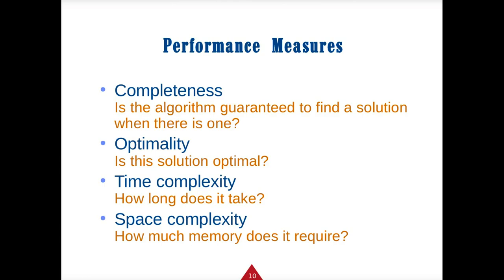To measure a good search, we assess completeness — did it find a solution if one exists? Is that solution optimal? What's the time complexity in big O? And how much space or memory does it require? These last two are especially important. For example, a large data center like Google prioritizes search time over space, whereas in a memory-constrained setting you'd want to minimize space. If you get something faster, it usually uses more space — that's the tradeoff.